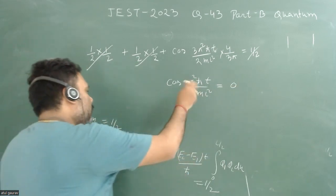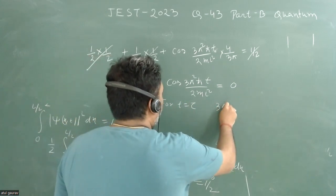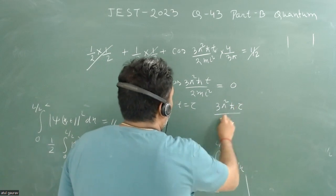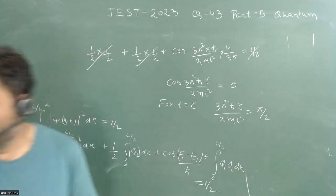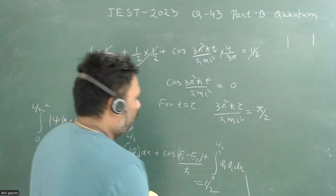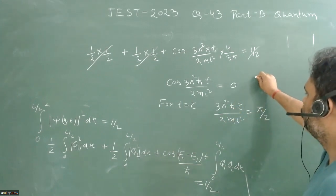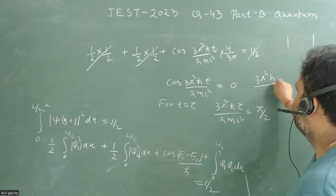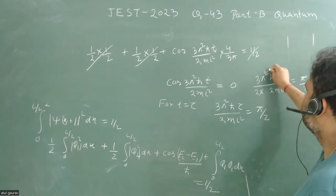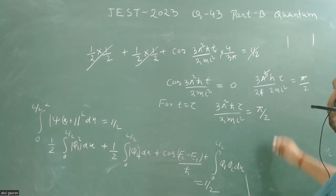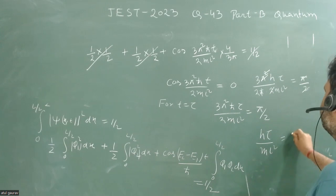So we need 3π²ℏ·τ/(2mL²) = π/2. Converting ℏ = h/(2π), we get 3π²·h·τ/(2π·2mL²) = π/2. The π's and factors of 2 cancel out, giving h·τ/(mL²) = 2/3. So the final answer is τ·h/(mL²) = 2/3, which corresponds to option A.